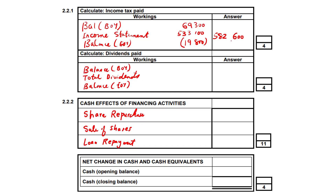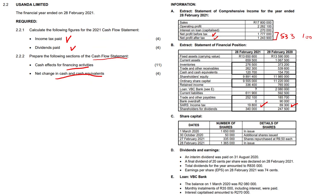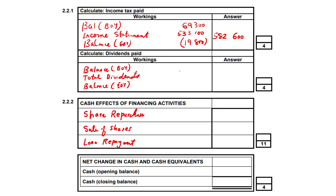Similarly, let's go to the dividend calculation. In respect of dividends, again we're in search of three figures. Number one, balance due at beginning of year. Number three, balance due at end of year. And number two, total dividends for the year, which they've given to us. So now we go to our answer sheet and start bringing in these figures. Dividends paid balance at beginning of year: 247,500. Total dividends for the year: 835,000. Balance at end of year: 340,000.